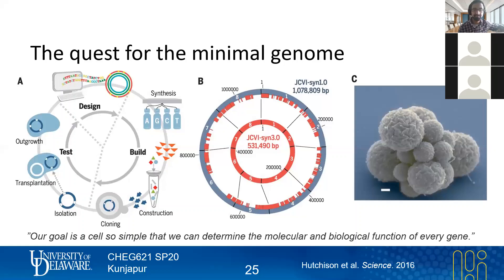Student question: I can sort of guess the answer based on bioinformatics, but how do they know that that's the minimal genome? Like, those little red boxes — how exactly are they saying there's nothing essential in the gap between segment five and six, or something like that? The figures shown here are from the third synthetic iteration of this work.